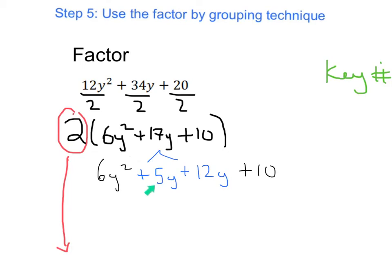Just like the last two examples, you can see 5 plus 12 would be 17, so we're just breaking that up.